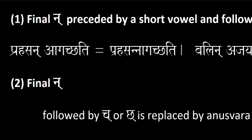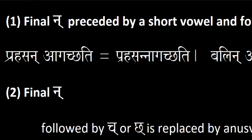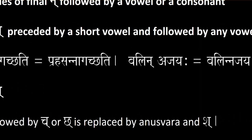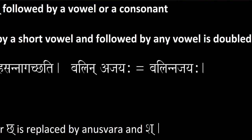For example, when na is preceded by a short vowel and then followed by a short vowel, you have 'balin' and 'ajayaha' — when they join, it still becomes 'balin ajayaha' with the doubled na.